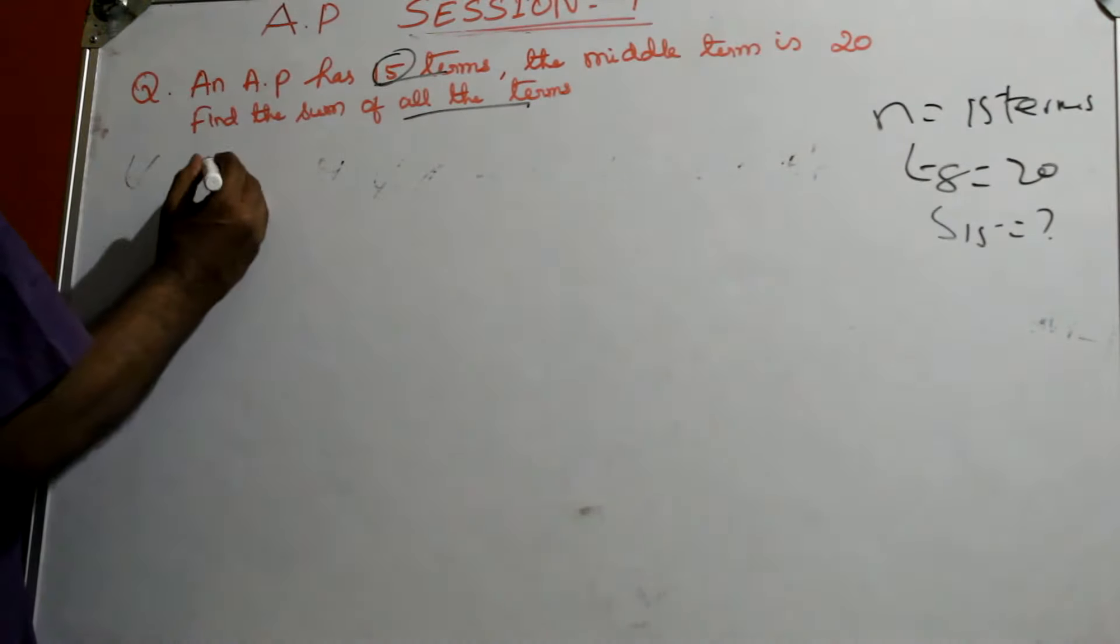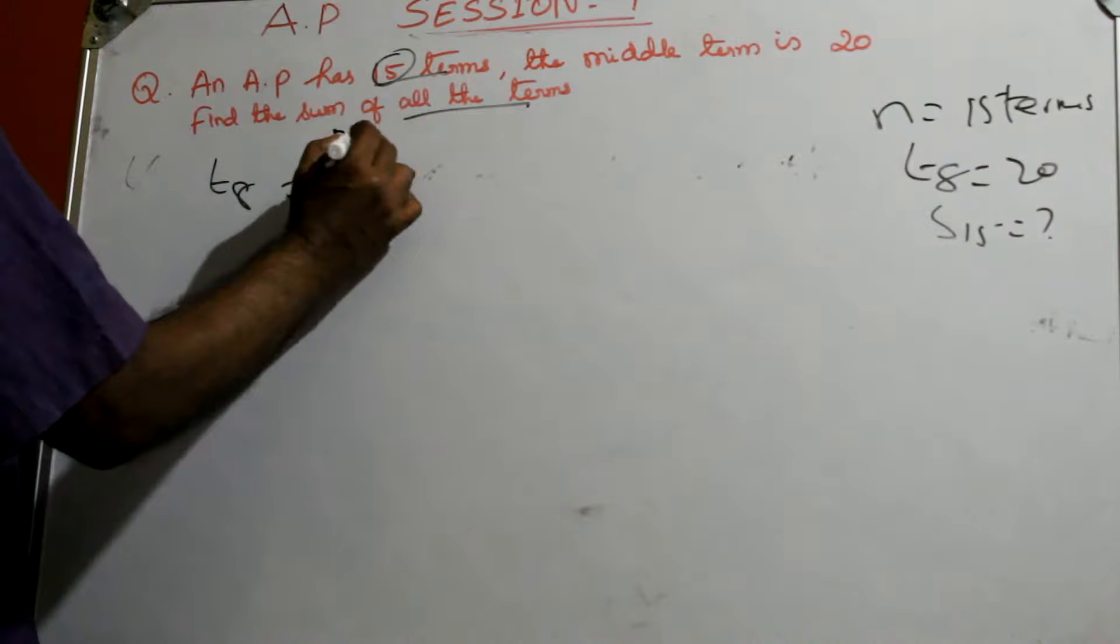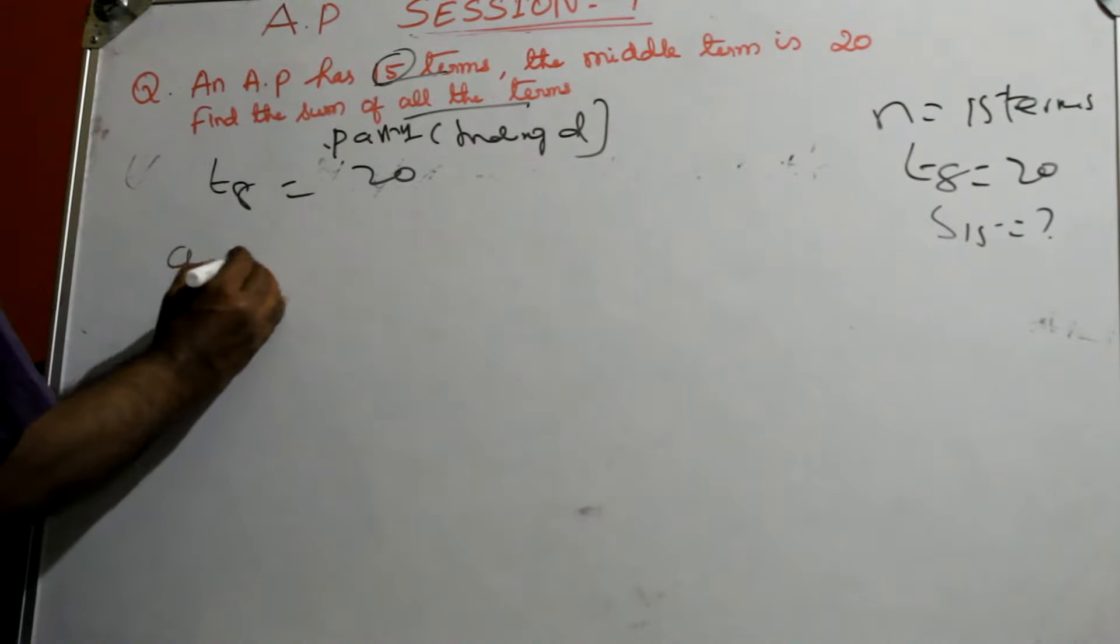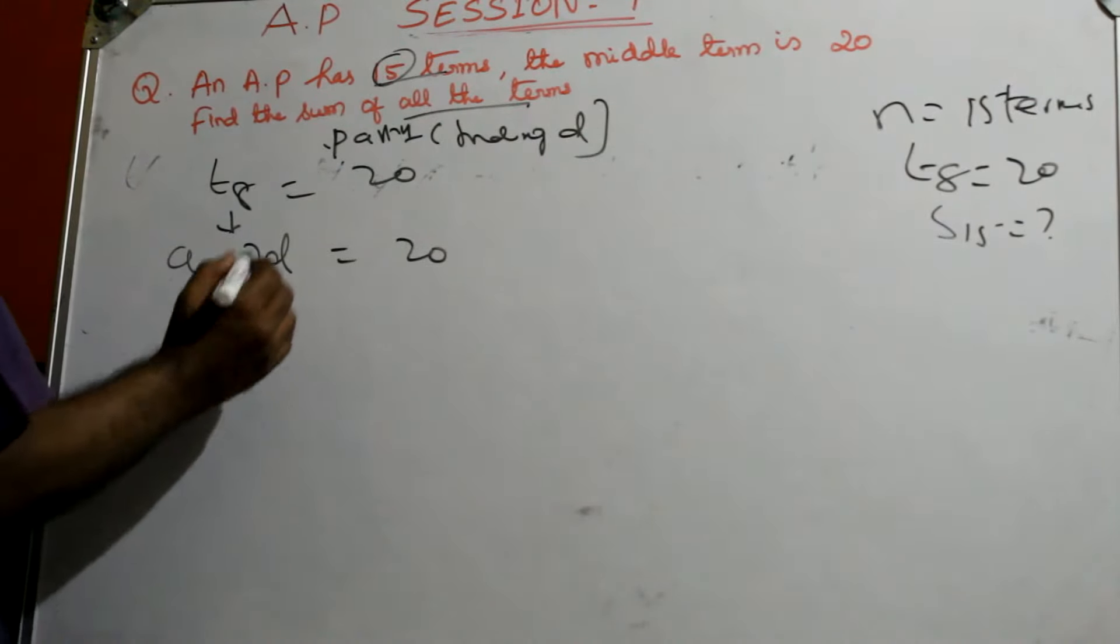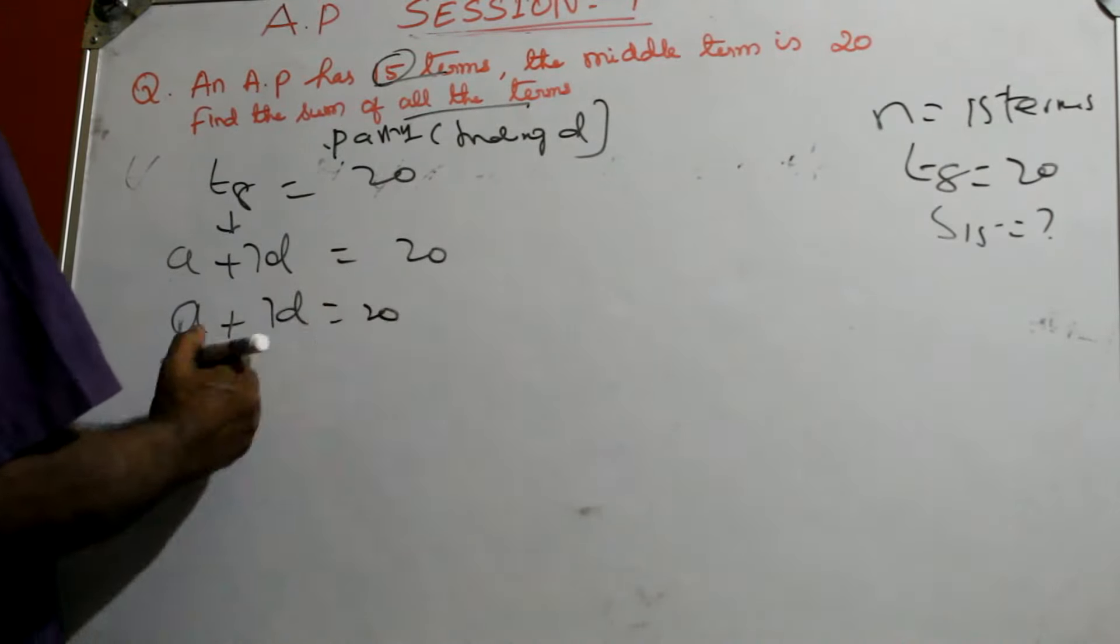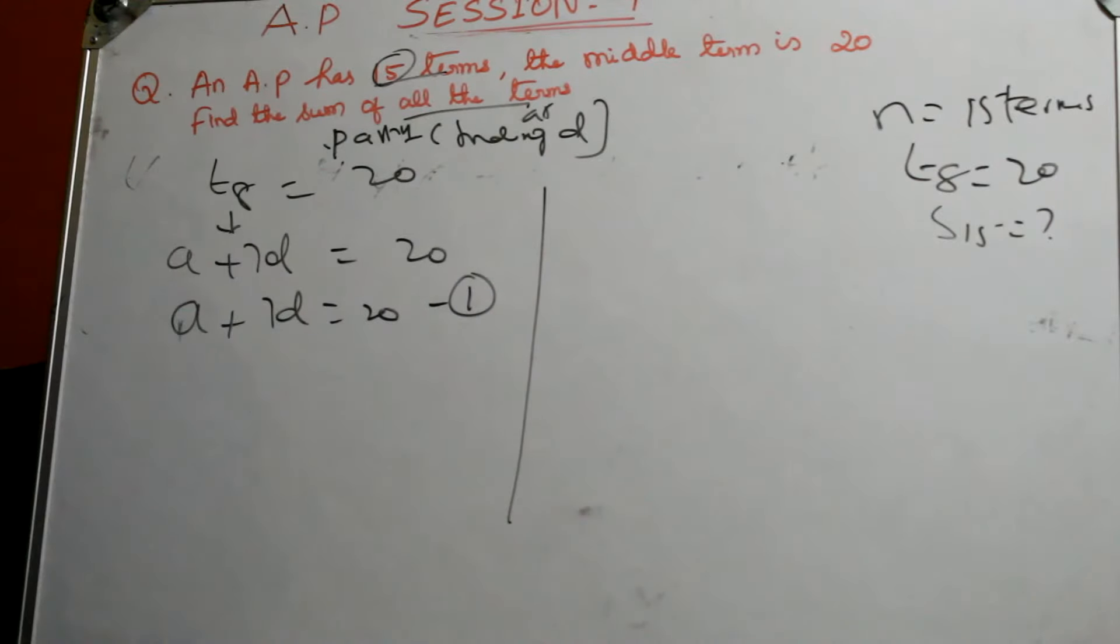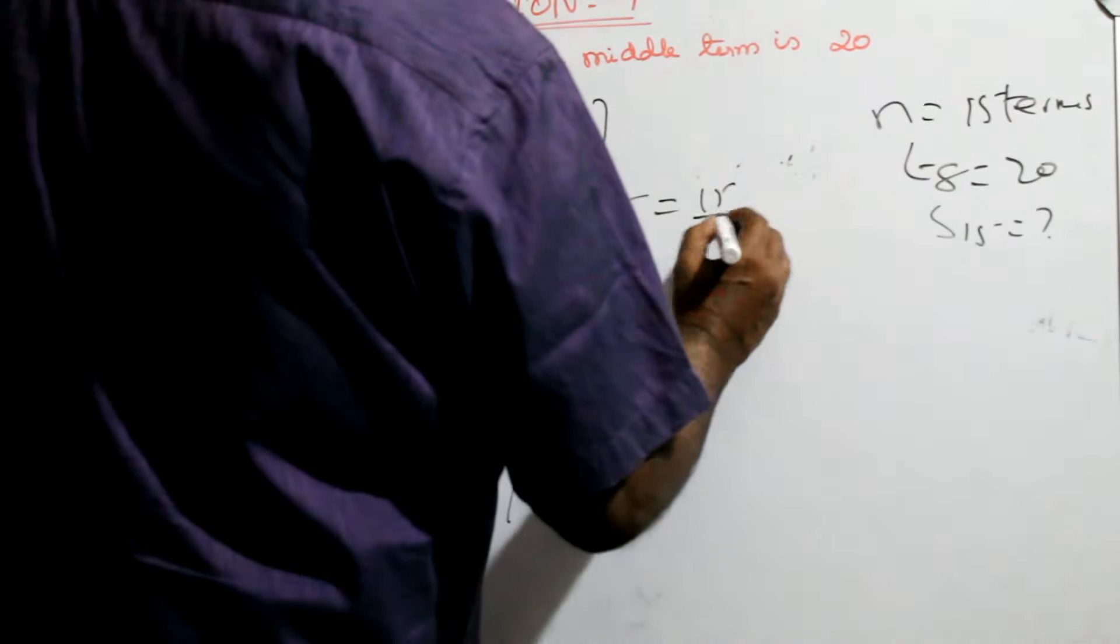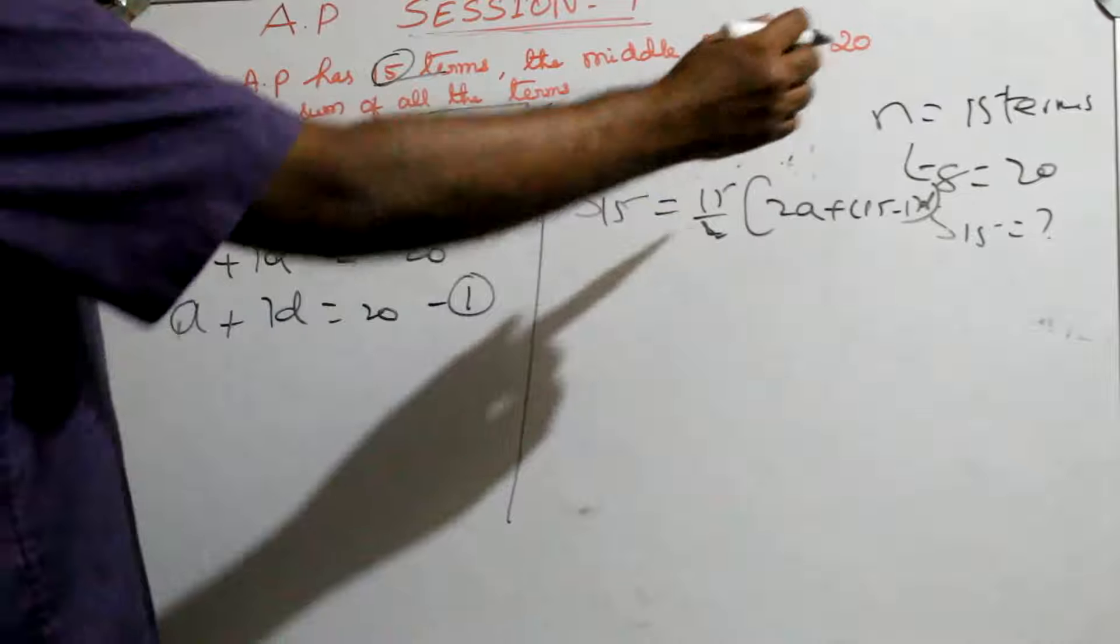We know the formula. T8 is equal to 20 means, first is part 1, finding d, finding common difference d. T8 means, you know, A plus 7d, which is nothing but 20. A we don't know, 7d, equal to 20. D also we don't know. Finding A and D. You put it equation number 1. Next is S15, 15 by 2 into 2A plus 15 minus 1 into D, because we got n as 15.